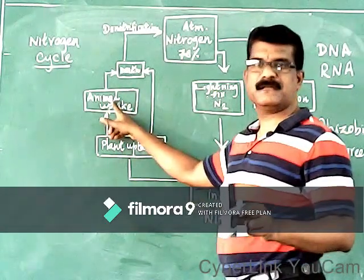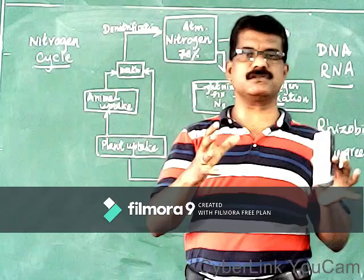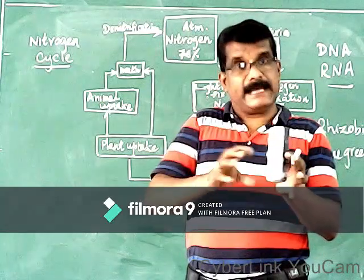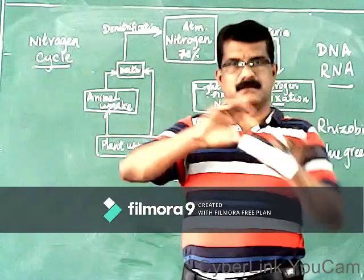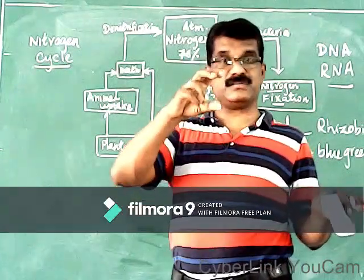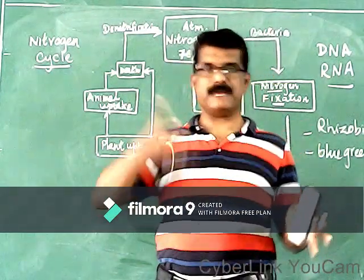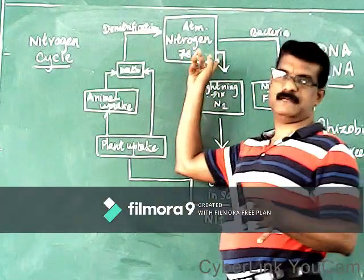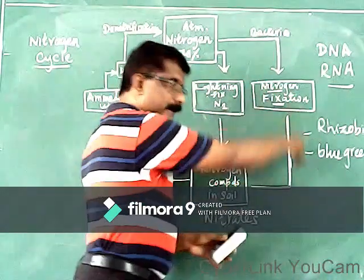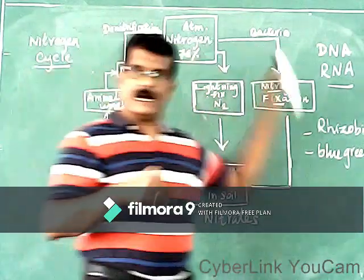When plants and animals die, they are decomposed by decomposing bacteria. The nitrogen compounds are then broken down by denitrifying bacteria, which split the nitrogen compounds and release nitrogen in the form of gas back into the atmosphere. So nitrogen starts from the atmosphere, goes through different organisms, reaches the soil, and again goes back to the atmosphere.